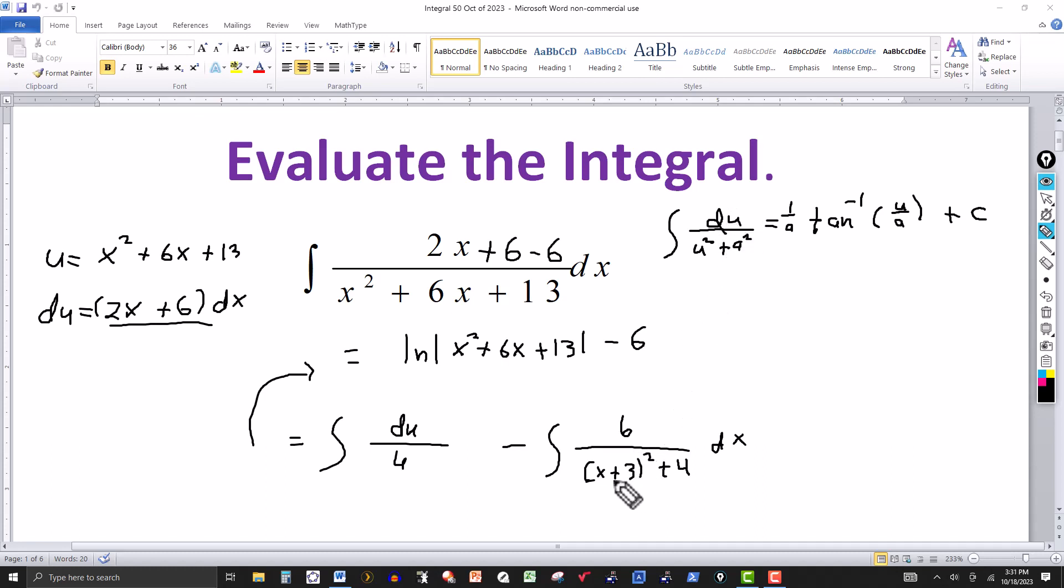So again, in this setup then, the x plus 3 would represent the u, and the a would represent the 2. Square root of 4 is 2. So this would be then minus 6.